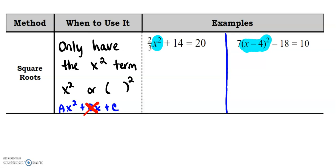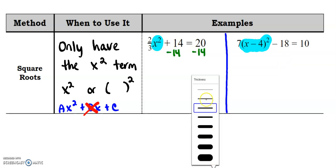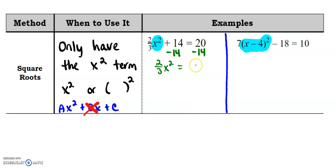In both cases, you want to get the x squared alone. So in this first one, I'm going to subtract 14. And so I'm going to have two thirds x squared equals six. And what I'm going to do is I'm going to multiply by the reciprocal of this fraction. So I'm going to multiply by three over two to get rid of the two thirds. And then six times three is 18. So this is 18 divided by two, so that's nine. And then I'm going to take the square root of both of them. So I'm going to get both sides. So I'm going to get x equals plus or minus three.